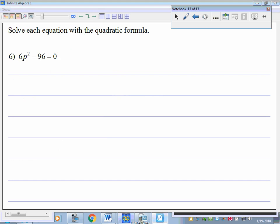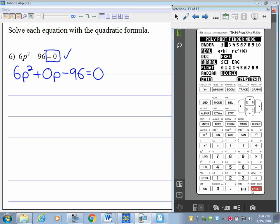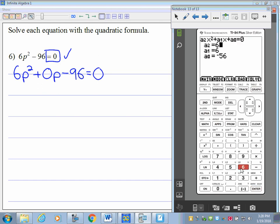If I look at number 6, it's another thing we need to make sure of. We have equals 0, so we're good. But whenever we write it out, it might be clearer to see if I put the 0p in. Because now you get to see what that b term is, what that coefficient is. So once we have that, it's just the exact same process. Apps. PLYSMLT2. Going number 1. Next, 6, 0, and negative 96. So we get our answer. This time it's p = 4 and p = -4. That's it.